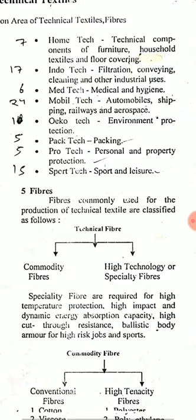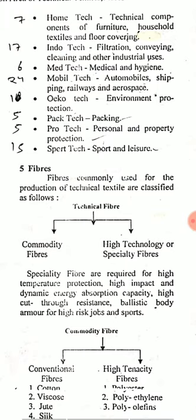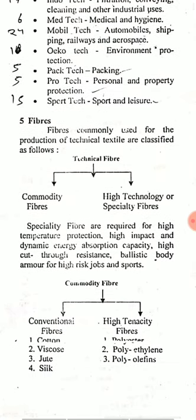Fibers commonly used for production of technical textiles may be classified in two categories: commodity fibers and high technology or specialty fibers. Specialty fibers are required for high temperature protection, high impact and dynamic energy absorption capacity, high cut-through resistance, and ballistic body armor for high-risk jobs and sports. Commodity fibers can be further classified into conventional fibers — cotton, viscose, jute and silk — and high-tenacity fibers — polyester, polyethylene and polyolefins.